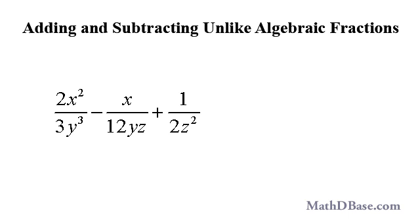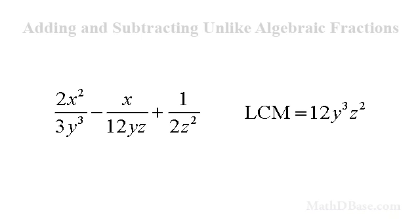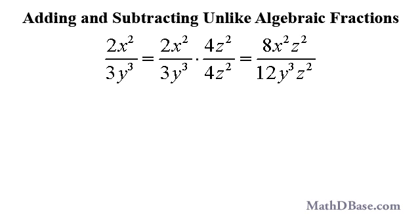If we have x over 12yz subtracted from 2x squared over 3y cubed and then add 1 over 2z squared, the LCM is 12y cubed z squared. 2x squared over 3y cubed lacks the factor of 4z squared. After multiplying, its numerator becomes 8x squared z squared.